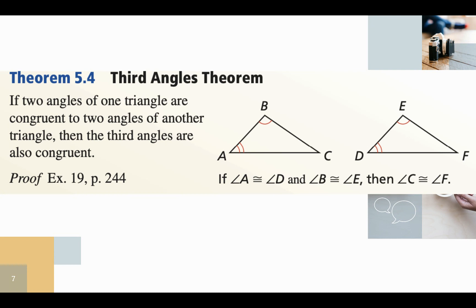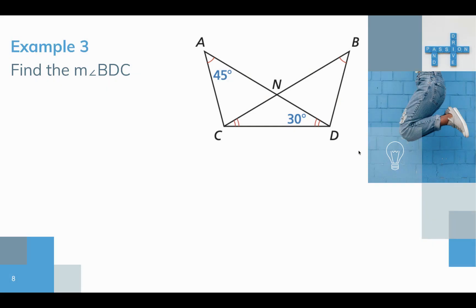Here's a very intuitive theorem called the Third Angles Theorem. If two triangles have two pairs of angles that are congruent to each other, then the third angles must also be congruent. This is very intuitive — it comes from the triangle sum theorem — and it's very useful.